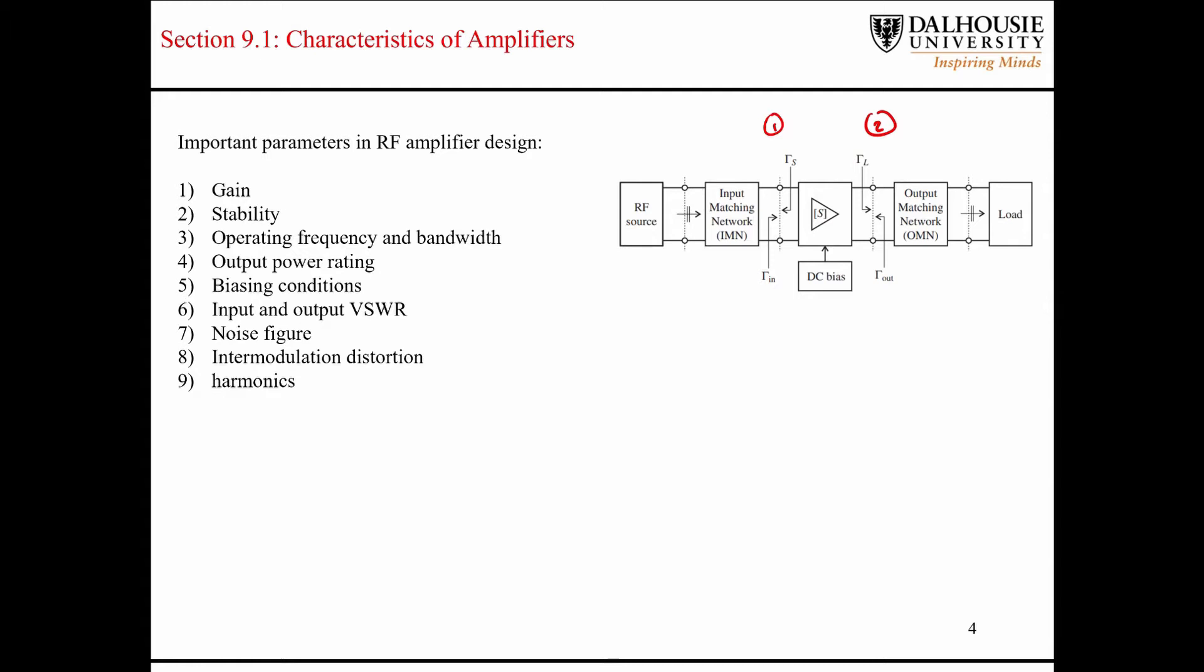The next thing is stability. Like I said, that's what we're going to be talking about today. Operating frequency and bandwidth is very important. When you have a set of design specifications for an amplifier, you're going to want to achieve your various gain and noise performance over a certain frequency band. So that's important.